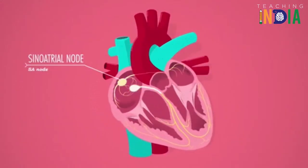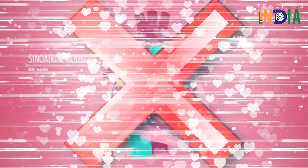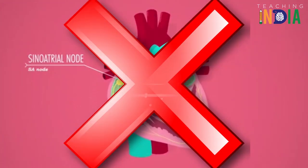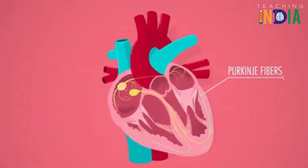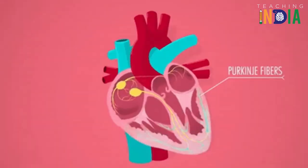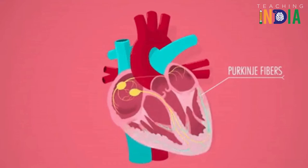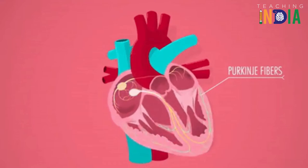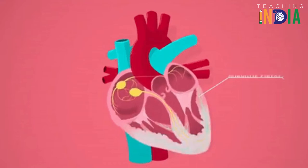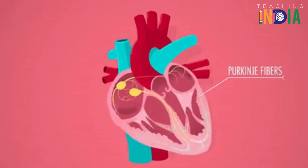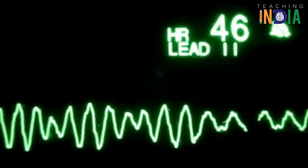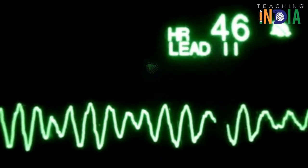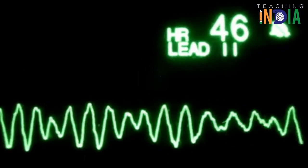If the sinus node is not working properly or fails, the Purkinje fibers can still produce 15 to 40 heartbeats per minute on their own. When the Purkinje fibers independently produce a heartbeat, this is called a premature ventricular contraction.